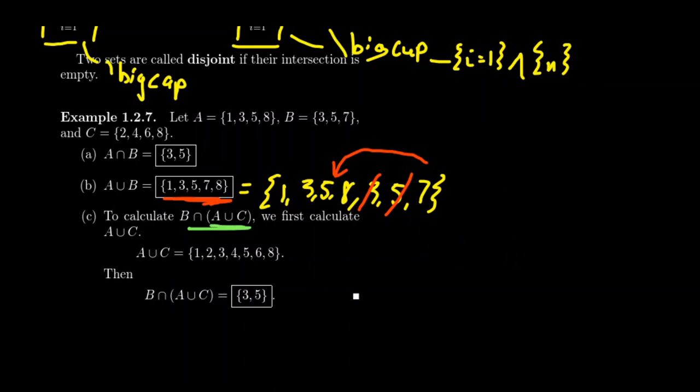If you want to do A union C, parenthesis tell us we'll do A union C first. We're going to join together the elements of A and C, so we get {1,2,3,4,5,6,8}. Now with A union C in mind, we intersect that with B. What elements belong to both sets? 3 belongs to both, 5 belongs to both, but 7 doesn't. So the intersection is {3,5}.